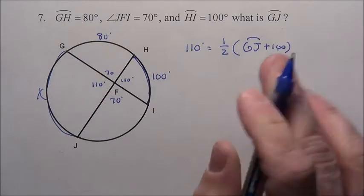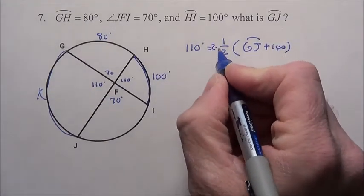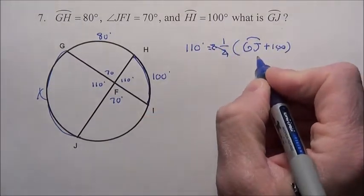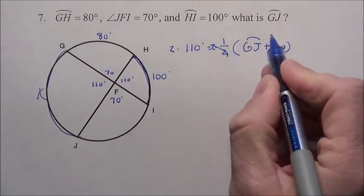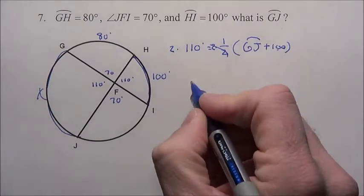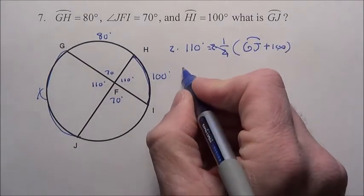How do you get rid of a half? You could distribute through it, but that's silly. Let's just get rid of it by multiplying by two, it's gone. But if I multiply this side by two, I've got to multiply this side by two. In other words, we knew half of 220 was going to give us the 110 we needed. So two times that's 220.